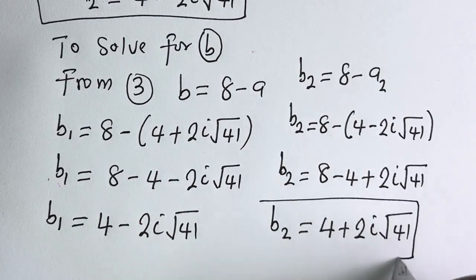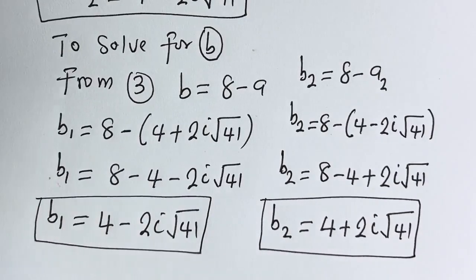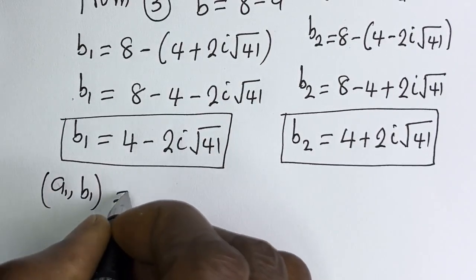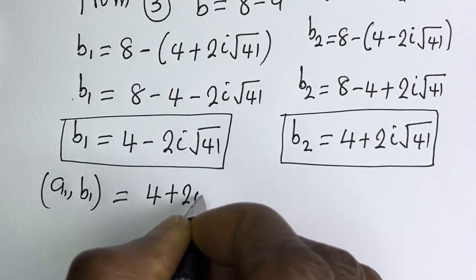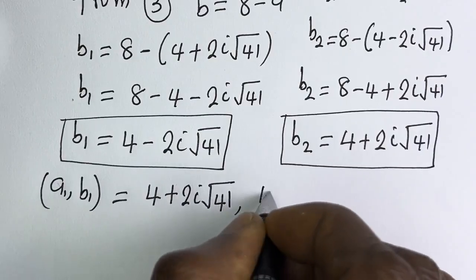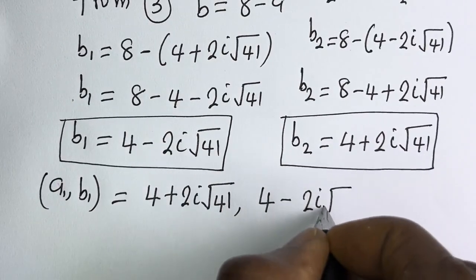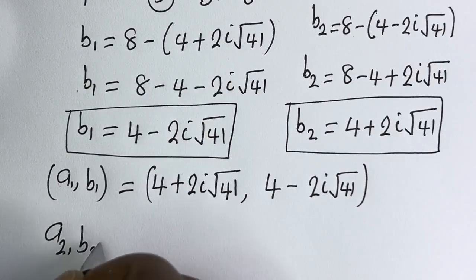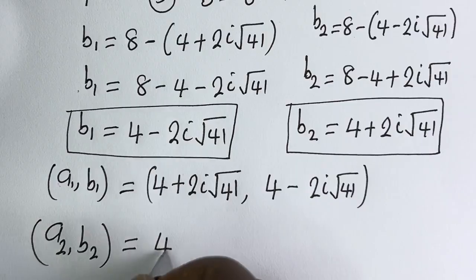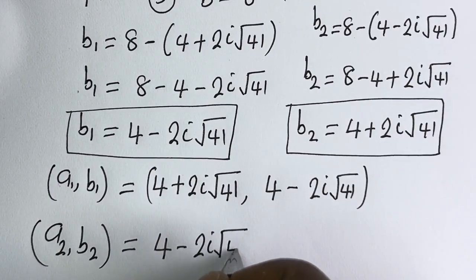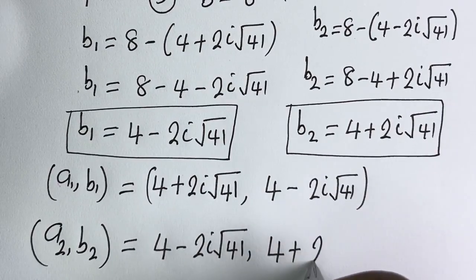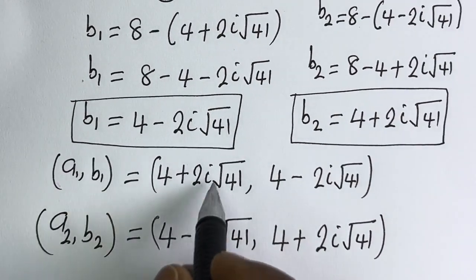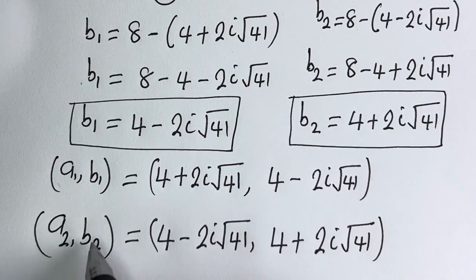This is the value of B2 and this is the value of B1. Our final answer: (A1, B1) equals (4 plus 2i square root of 41, 4 minus 2i square root of 41), and (A2, B2) equals (4 minus 2i square root of 41, 4 plus 2i square root of 41). We can see that the value of A1 equals the value of B2, and the value of B1 equals the value of A2.